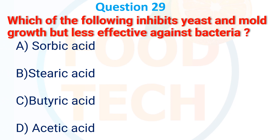Which of the following inhibits yeast and mold growth but is less effective against bacteria? A. Sorbic acid, B. Stearic acid, C. Butyric acid, D. Acetic acid. The answer is A. Sorbic acid.